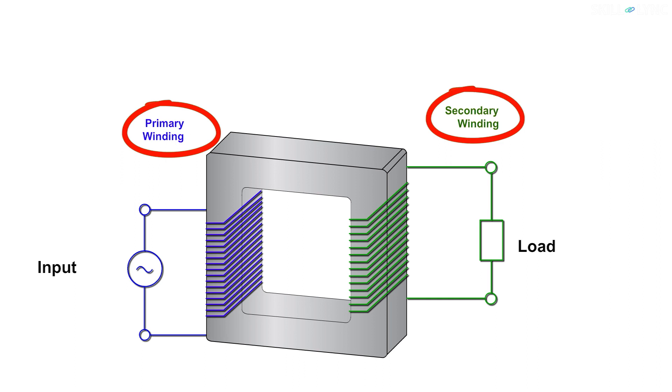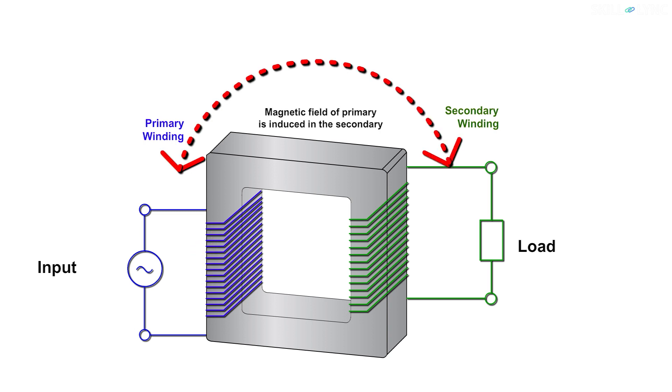Transformers consist of two windings: a primary winding and a secondary winding. These two windings are wound on the same magnetic core but are electrically separated. Primary winding is connected to an alternating current source. When current is passed through the primary winding, they develop a magnetic field of their own due to electromagnetic induction.